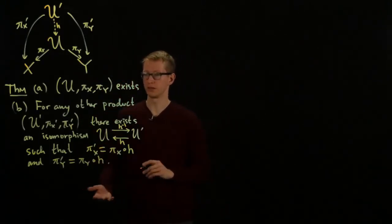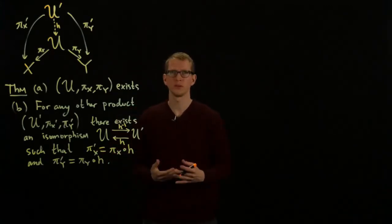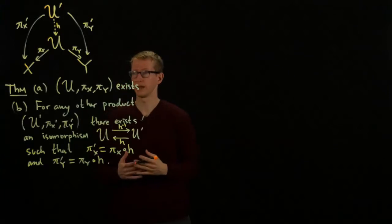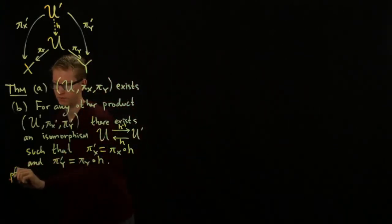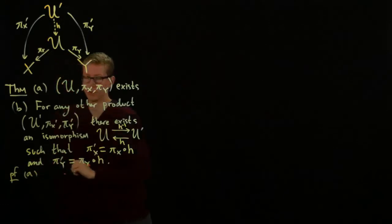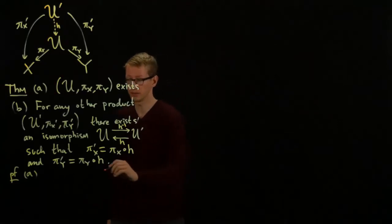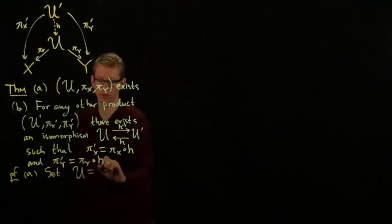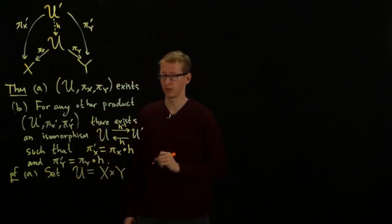So this is the sense in which it's unique. There's an isomorphism between the two. So let's first start by proving that such a thing exists. And existence might be a little bit easy for you to comprehend, because you know what a product is already. So let's set U to be exactly what you think it should be, the usual Cartesian product of X and Y.